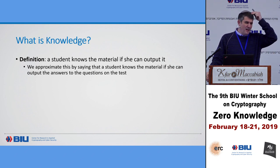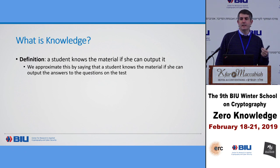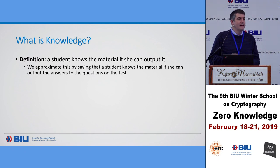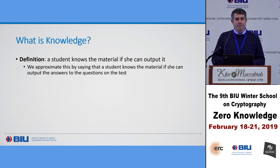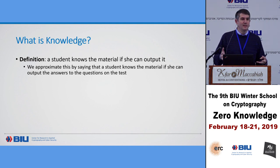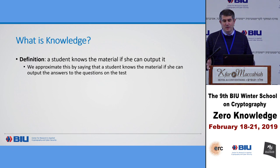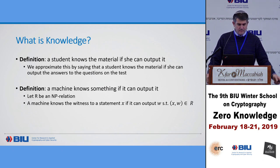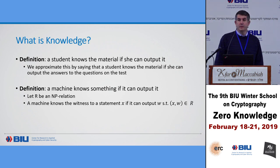Why define knowledge by output? Because it's something concrete that we can actually check. Often we think of knowing something as an internal fuzzy feeling — that's not something we can work with. But in the world of Turing machines or polynomial time machines this becomes much more concrete. I want to define that a machine knows something if it can output it.